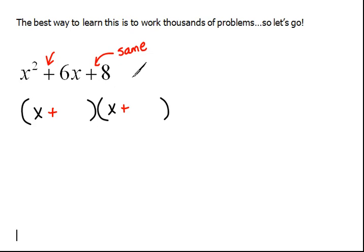Alright, now, the last term. The last term comes from multiplying the last terms in the binomial. So we have to think of what times what will give us an 8. And also, we have to remember that it has to combine somehow to give us a 6 in the middle.